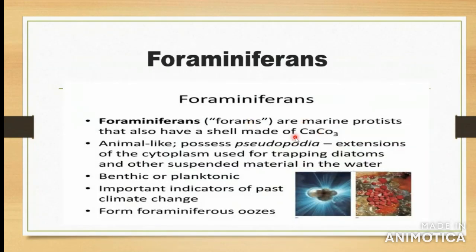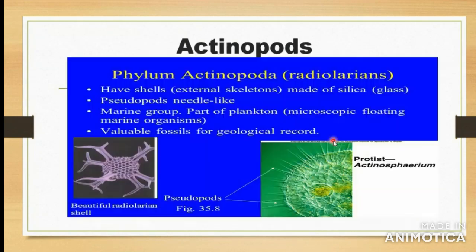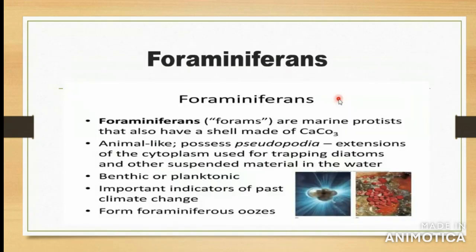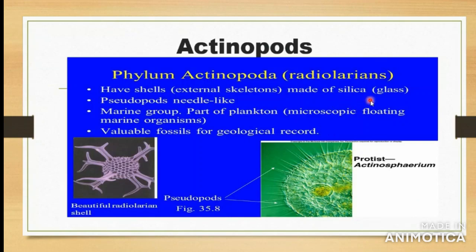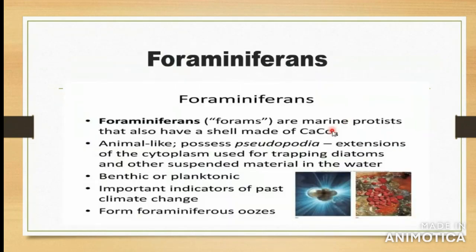The shells of Foraminiferans are made of calcium carbonate, while the shells of Actinopods are made of silica. Therefore, Foraminiferans give a chalky or chalk-like appearance - a pale yellowish-white type appearance - because of the calcium carbonate. While Actinopods give a glass-like appearance because of silica.